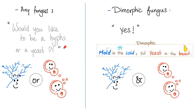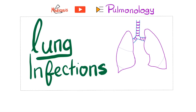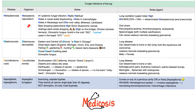Imagine all fungi talking to the dimorphic fungi: would you like to be hyphae or yeast? The dimorphic answered, yes - how about both? We're mold in the cold, we're yeast in the beast. Examples of dimorphic fungi include histoplasmosis, blastomycosis, coccidioidomycosis, and paracoccidioidomycosis, discussed in the pulmonology playlist. These three - histo, blasto, and coccidioides - are dimorphic fungi.